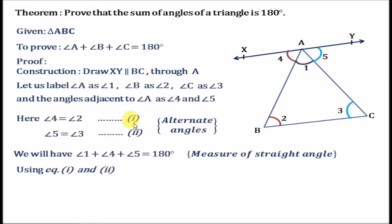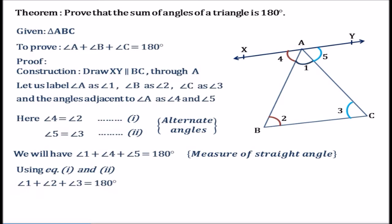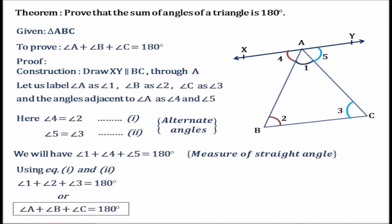Using equation 1 and 2, we can write angle 2 in place of angle 4 and angle 3 in place of angle 5. So we get angle 1 plus angle 2 plus angle 3 equals 180 degrees. Replacing with actual vertices: angle A plus angle B plus angle C equals 180 degrees. The theorem has been proved — this is the angle sum property of triangle.